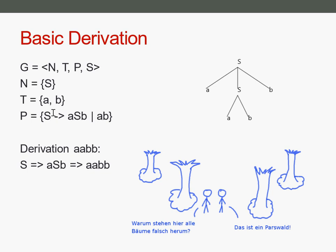In this case, S derives to aSb. We can replace the left-hand side of the arrow with the right-hand side. We also have the pipe symbol, which we use so we don't have to write as much — it acts like an 'or', indicating that another right-hand side starts. So there are actually two rules: one rule is S derives to aSb, and the other is S derives to ab, since they share the same left-hand side.